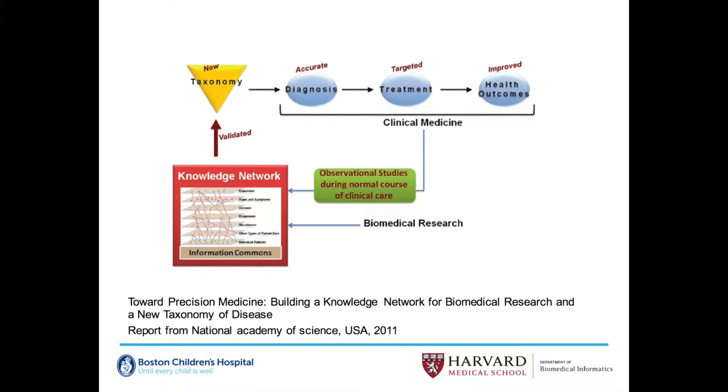Why it's important to create this knowledge network is to help create a new taxonomy of disease. Consider type 2 diabetes — another name is diabetes mellitus, meaning sugar, because it was named after tasting sugar in the urine. The name of a disease people have even today comes from these very old naming conventions. The taxonomy of disease we use today doesn't take into account the latest developments in genomic studies or many different fields. Creating all those different knowledge networks will definitely help in finding those new taxonomies to have more accurate diagnoses, potential treatments, and improved health outcomes.